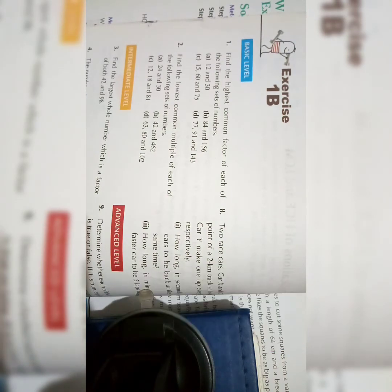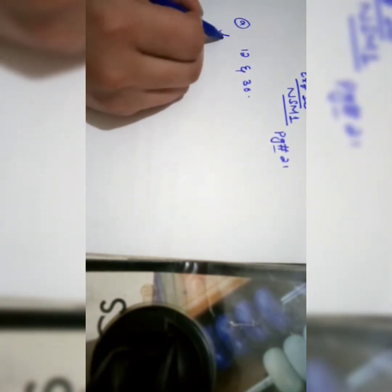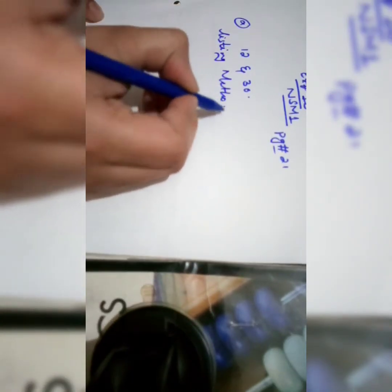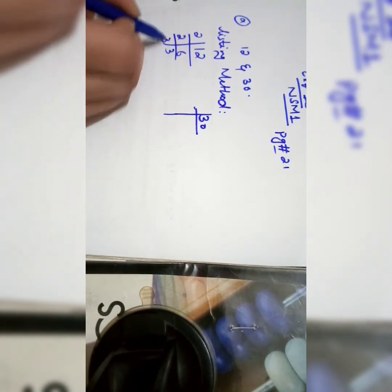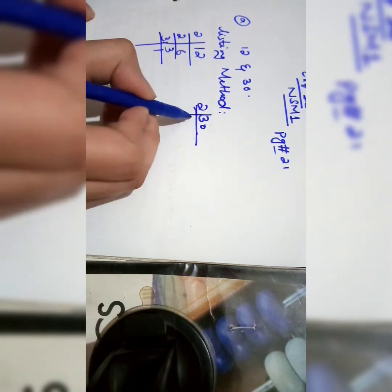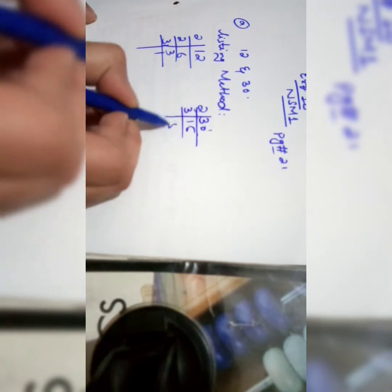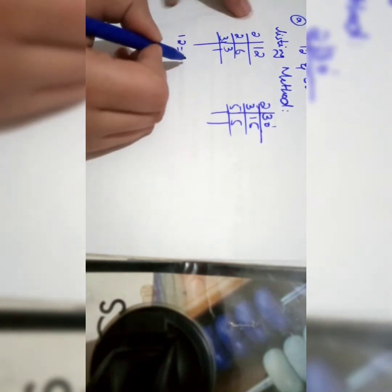Question 1, Part A: find the HCF of 12 and 30. I will first show both methods so students can apply whichever they prefer. Solving by listing method: make the factors of 12 and 30. Two threes are six, three ones are three. Now write down the factors of 12: 2 multiplied by 2 multiplied by 3.